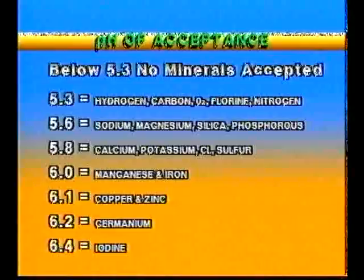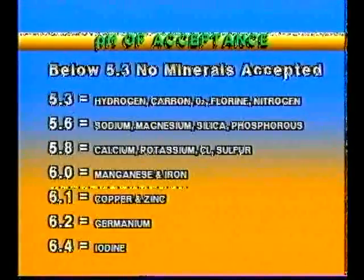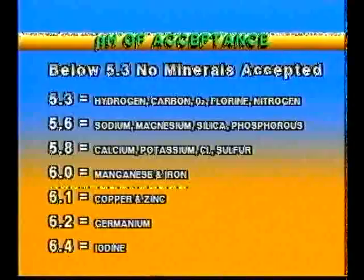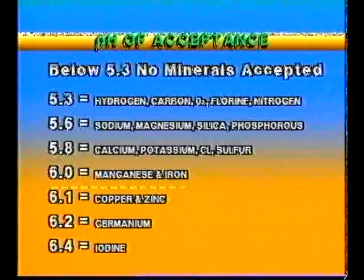If I look at manganese, which you can't absorb until you have a pH of 6.0 — if you look at eggs and sperm, there's no egg or sperm that will develop, whether it's in a peach or in you, if you do not have sufficient quantities of manganese in the body.